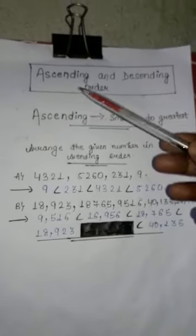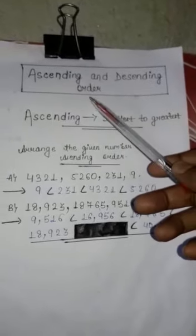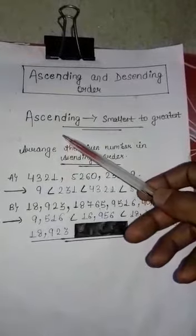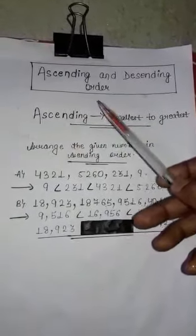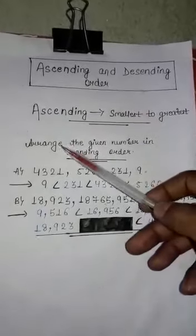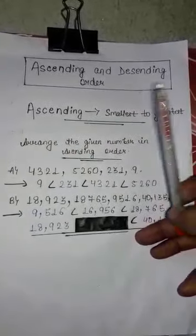Good morning students, today I will teach you ascending and descending order for class 4th students. So let us see what is ascending. In Hindi we call it rohikram or abrohikram, or increasing order and decreasing order.